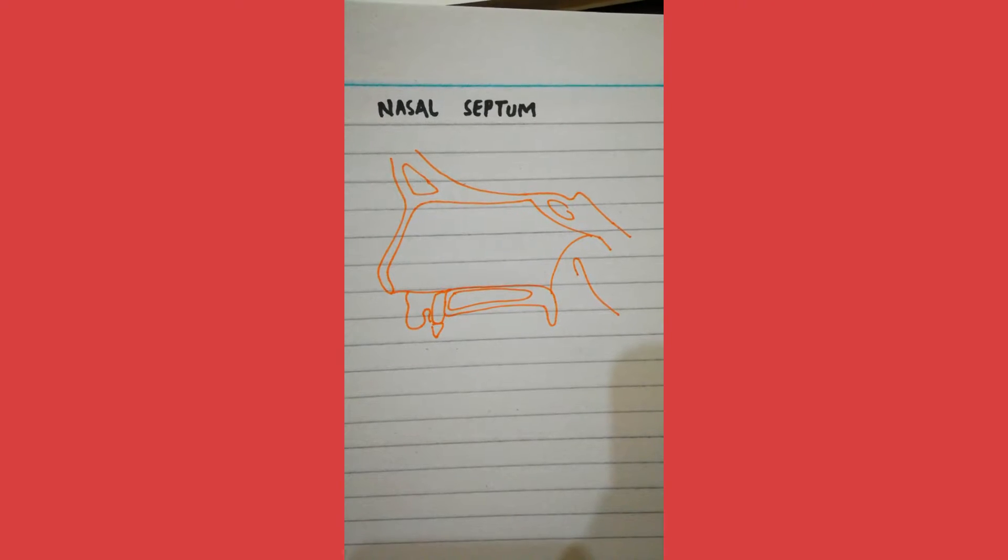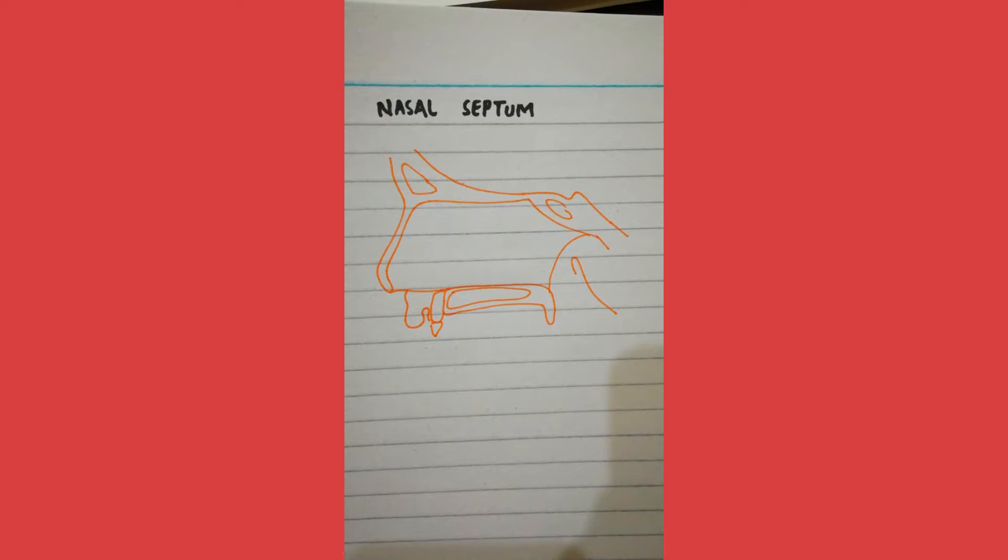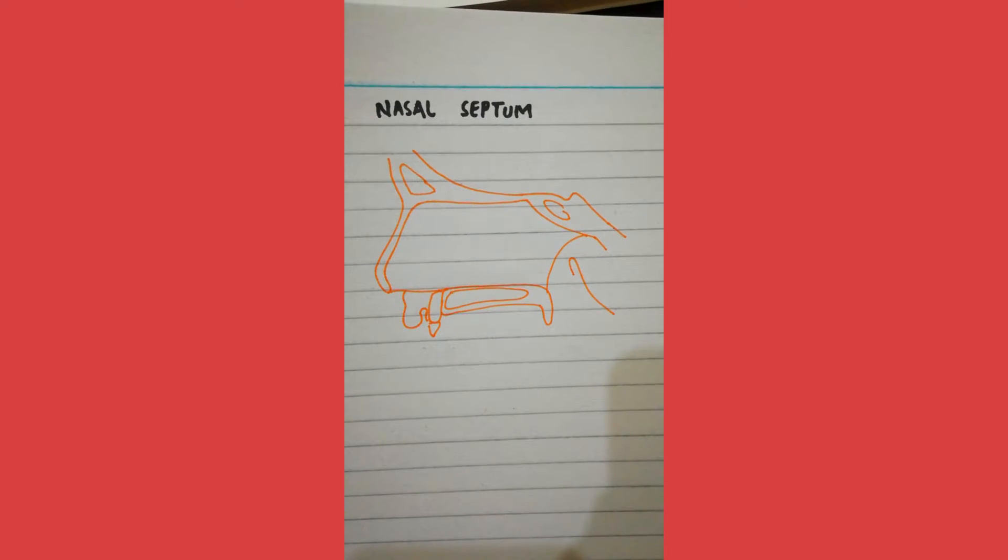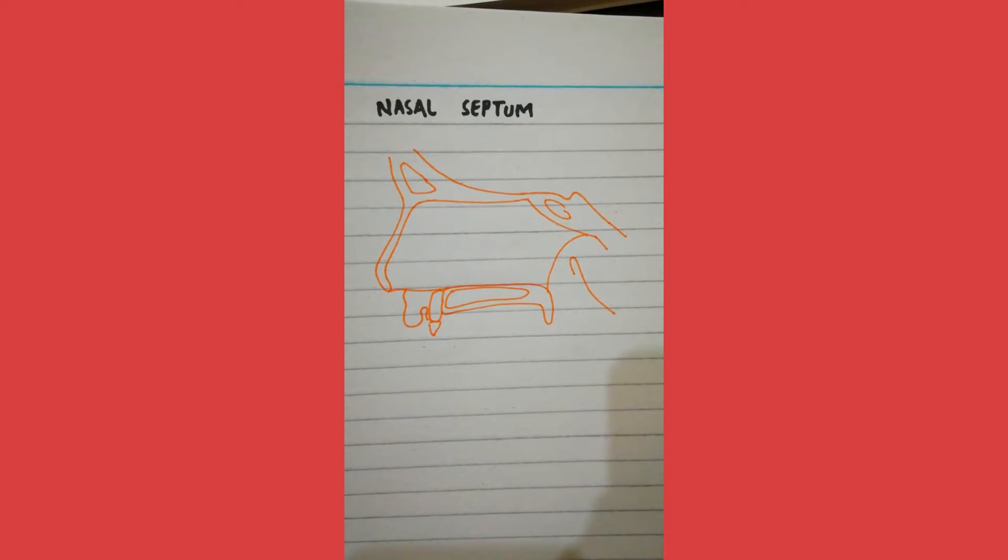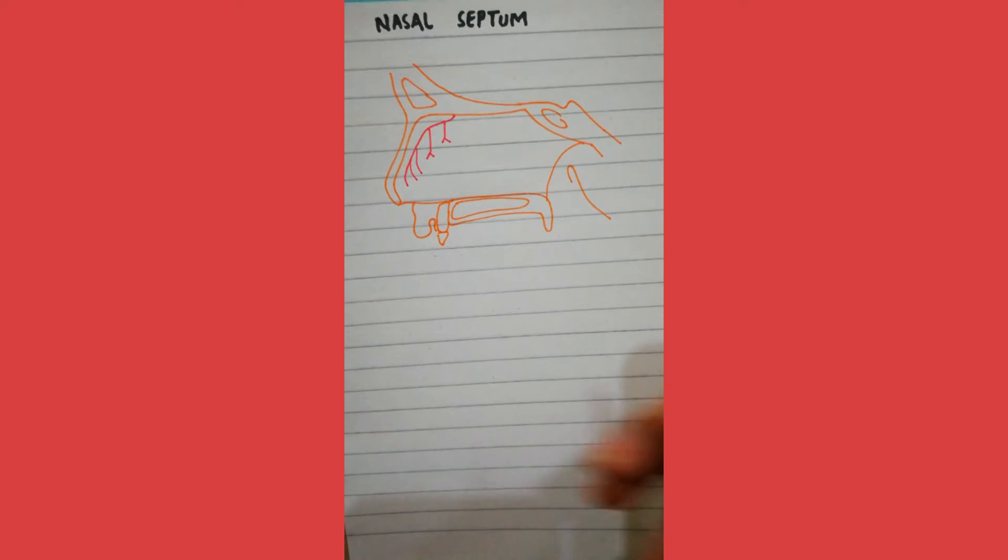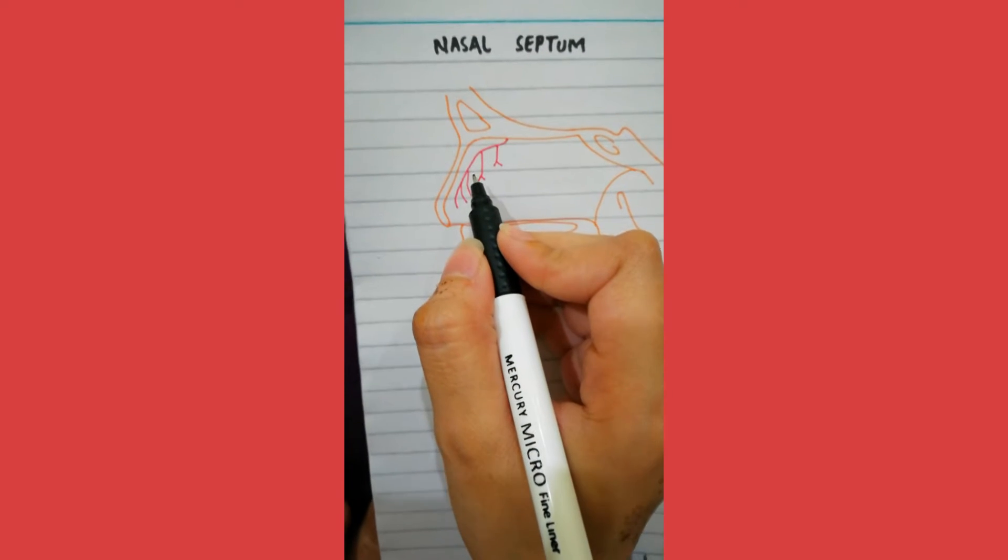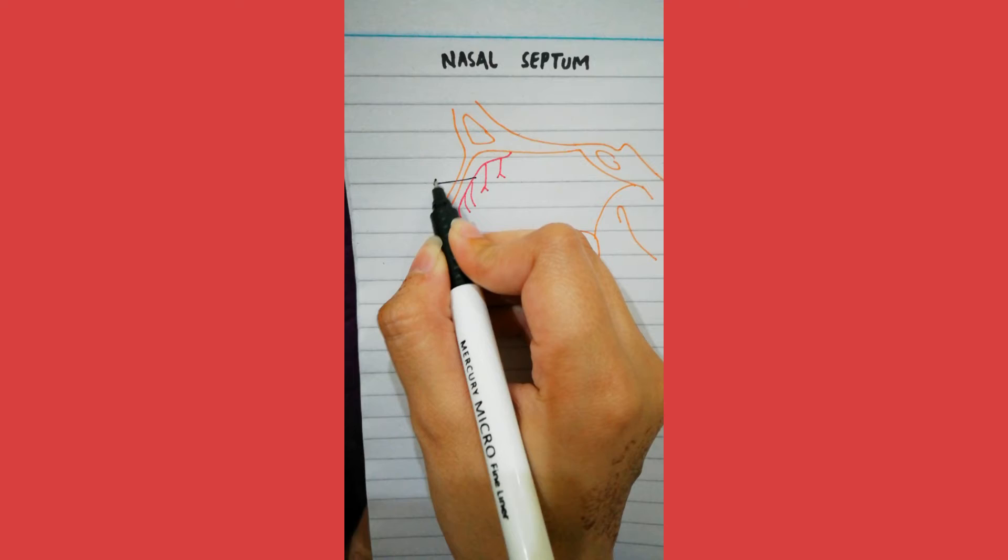We'll be talking about the nasal septum. First, this is the basic anatomy, and now I will be showing you the arterial supply of the nasal septum. This artery is shown; this is known as the anterior ethmoidal artery.